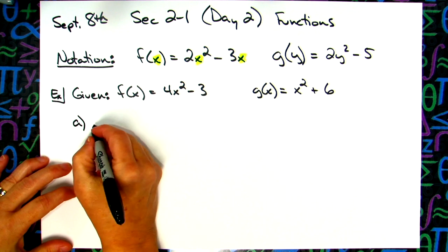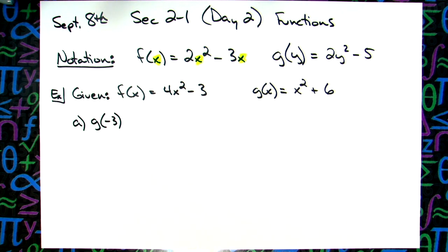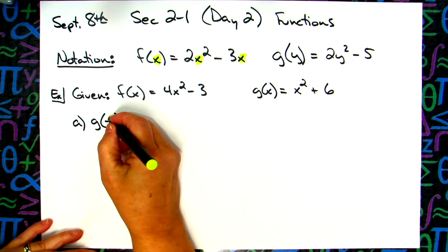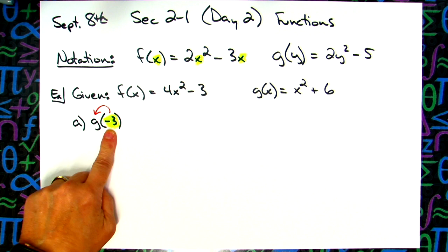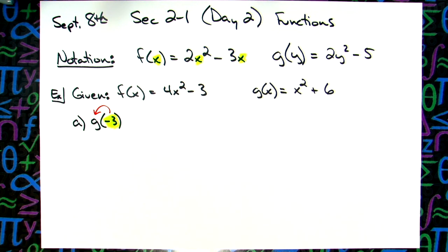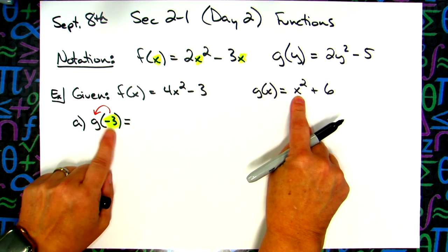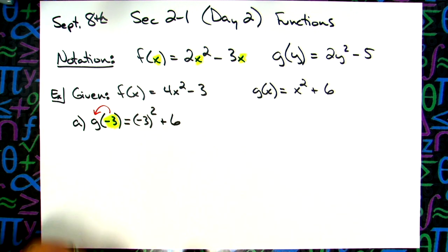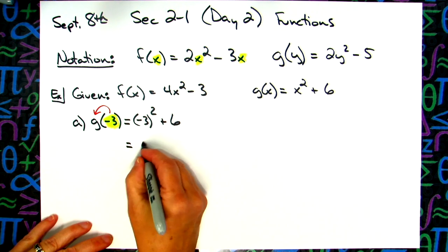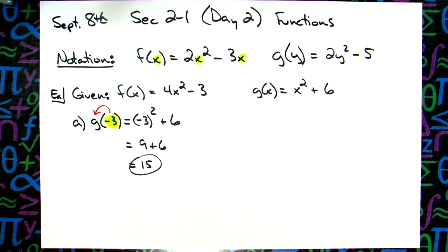Let's make it 4x squared minus 3 for my f function. And then for the g function, let's make it x squared plus 6. From there, let's do two questions. As a first question, just plugging in a regular number. So if I did g of negative 3, what that means is I need to take negative 3 and plug it into the function. I'm plugging it into the g function for x.